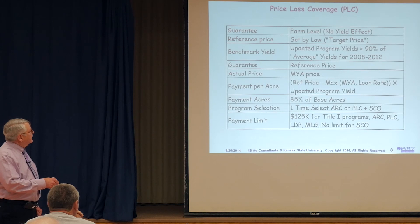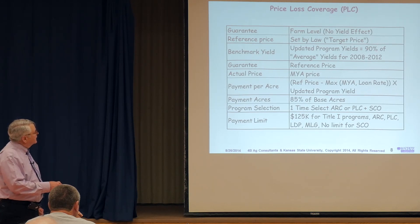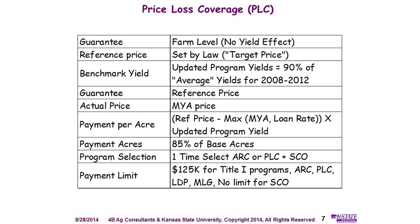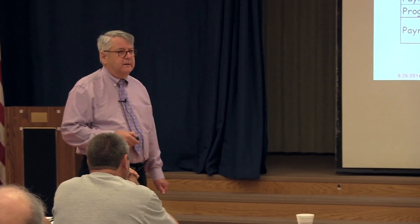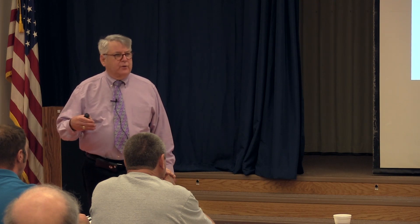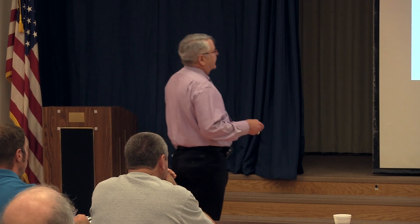PLC summary: it's a no-yield effect. The reference prices are set by law and do not change. You can update your program yields — it's 90% of the yields from 2008 through 2012 as your benchmark yield. Actual price, if it's lower than the reference price, you pay the difference times your updated program yield. You get paid on 85% of the base acres. It's a one-time selection — whatever you select, you are in that program for the life of the Farm Bill, either ARC or PLC. Landlords will have to sign off. If you and your landlord don't agree, you're not eligible for any payments in 2014, and in 2015 you're automatically dropped into the PLC program. There is a $125,000 payment limit.